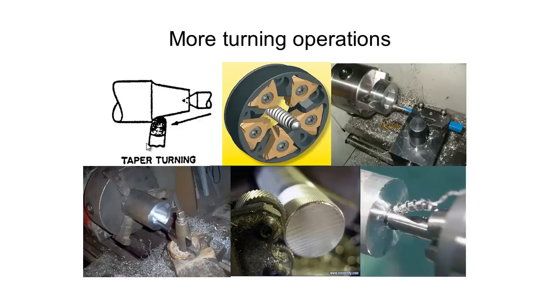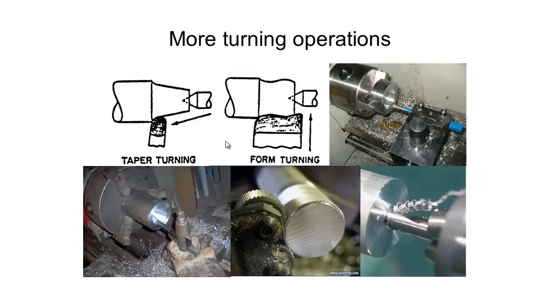The next one is form turning, where we can use a specific sort of die, something like this, which locks down onto our piece and gradually moves along, so it moves down in that direction, and this would be another way of creating a thread in this case.